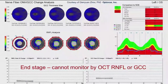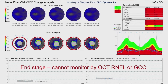When the RNFL becomes very thin, with each of these machines you hit a floor effect — in other words, you reach a number that the machine won't give you a value below. So even if the RNFL has fallen to a value below that floor, it will still read that floor value. You have to be careful not to be fooled into thinking that the patient is actually stable when, in fact, the patient has RNFL so thin that the machine won't tell you that they're actually getting worse.